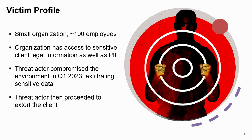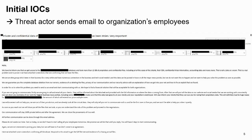So the victim profile: it's a small organization, about 100 employees. They had access to sensitive client legal information as well as PII, as most organizations do. The compromise occurred earlier this year — Q1. It involved exfiltrating sensitive data. The threat actor then proceeded to attempt to extort the client. This is the very first thing that showed us what was happening — you can see the threat actor actually sent an email to a whole bunch of the organization's employees.